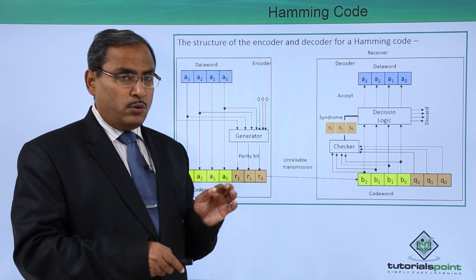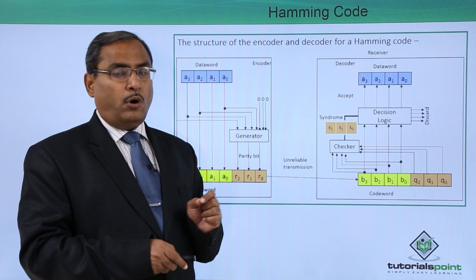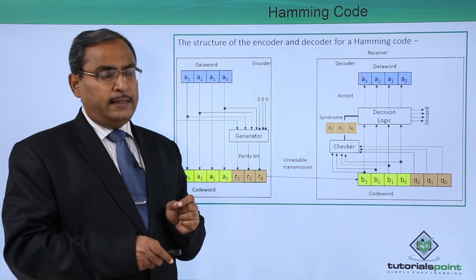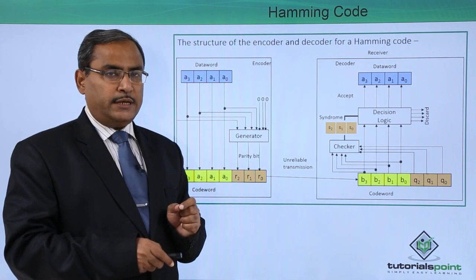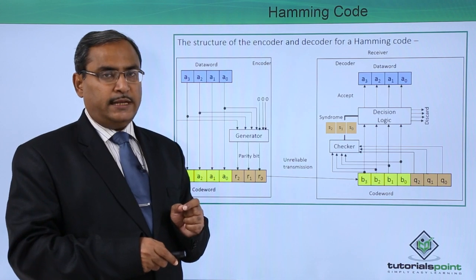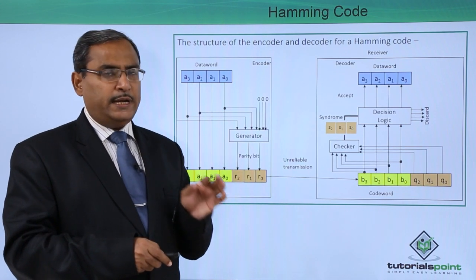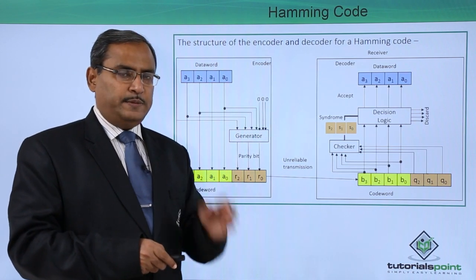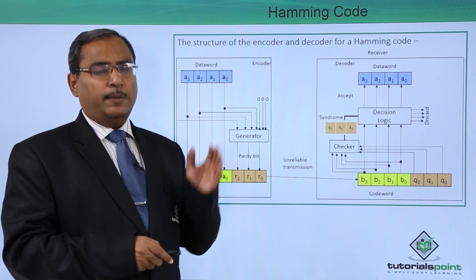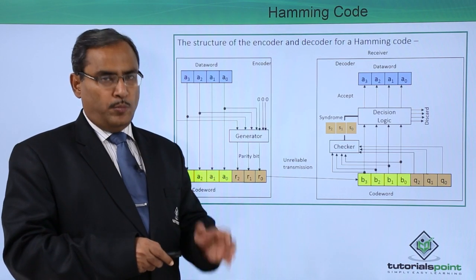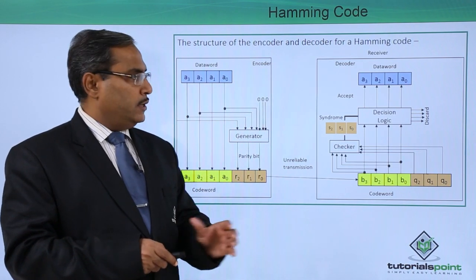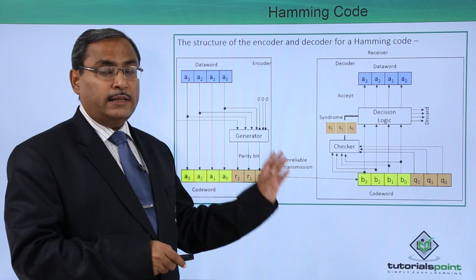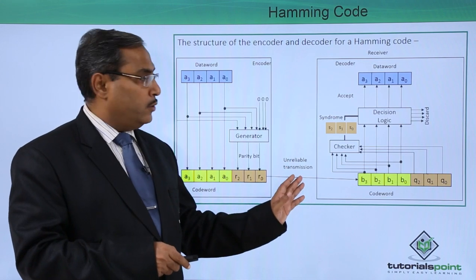Hamming code can also be called the SEC-DET method, that is single error correction and double error detection. This means a single bit error will be detected and corrected, while a double bit error will be detected only. This is another name for Hamming code.